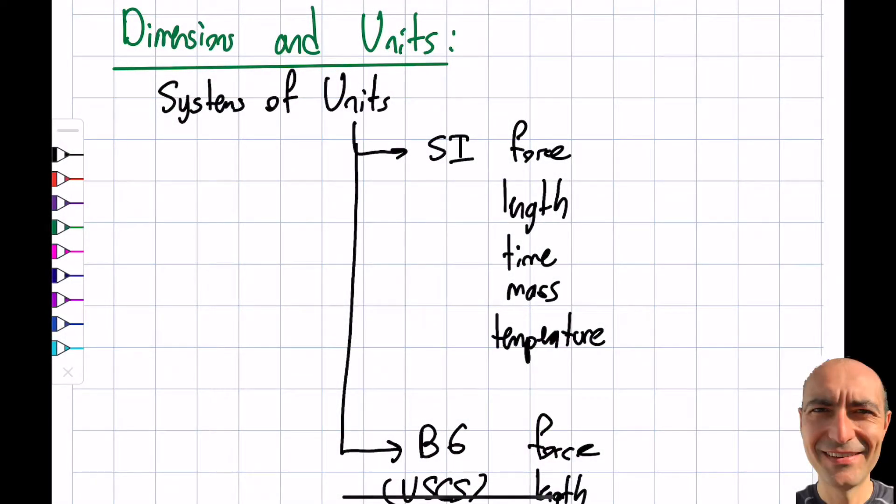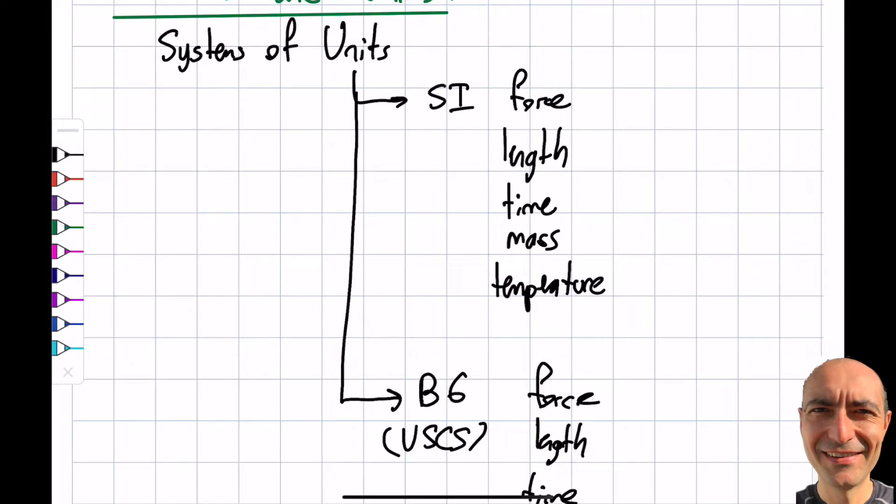Hi everybody, today I'm going to talk about dimensions and units. This is important because we have an SI unit, the standard international system, and we also have British gravitational, called USCS as well, the United States customary system. The question is, we have to communicate clearly with each other, so which one am I going to pick and why? I want to discuss that in this particular segment.